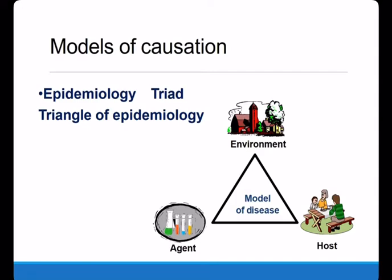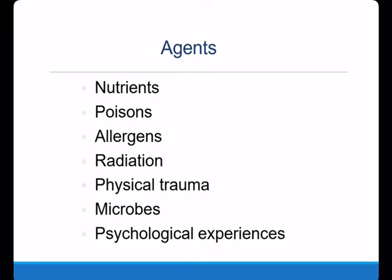The first is the triangle model, also called the triangle of epidemiology, which holds that the occurrence of disease is the result of the combination of the host, the environment, and pathogens. Under normal circumstances, people present a healthy state through the interaction of these three elements maintaining a dynamic balance. Once one element changes and exceeds what the triangle balance can maintain, the balance is destroyed and people will suffer from disease. This model considers the three factors but is difficult to explain chronic and non-communicable disease due to the absence of a specific etiology. Several types of agents can be mentioned: nutrients, poisons, allergens, radiation, physical trauma, microbes, and even psychological expressions.